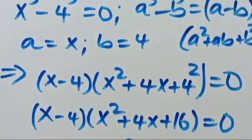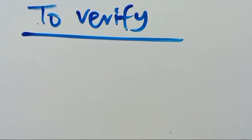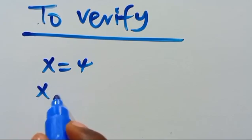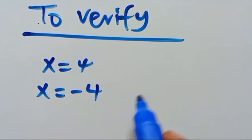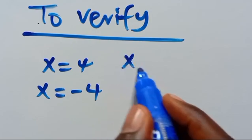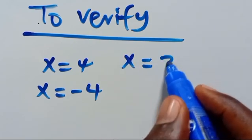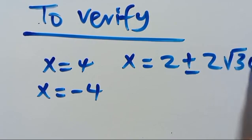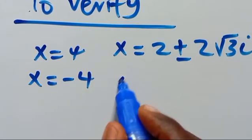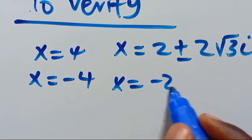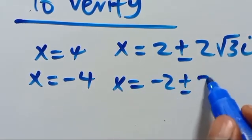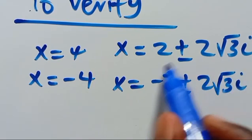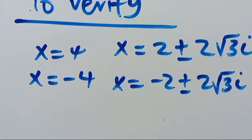Let's verify. We have x equals 4, x equals negative 4, and x equals 2 plus or minus 2 root 3 i as complex solutions. These are the real solutions and these are the complex solutions.